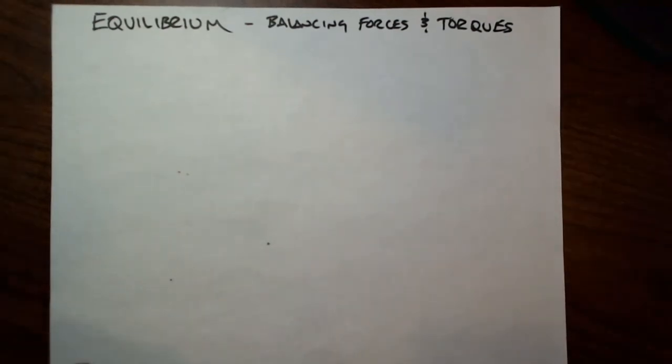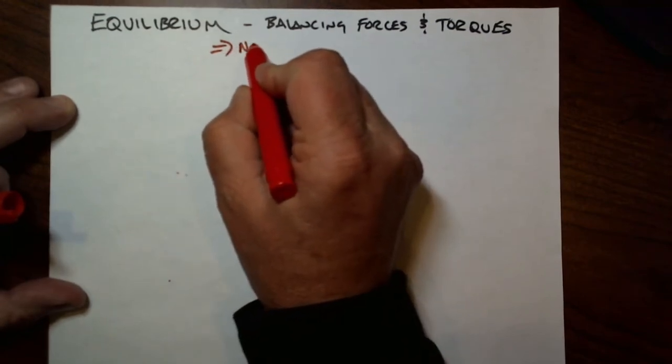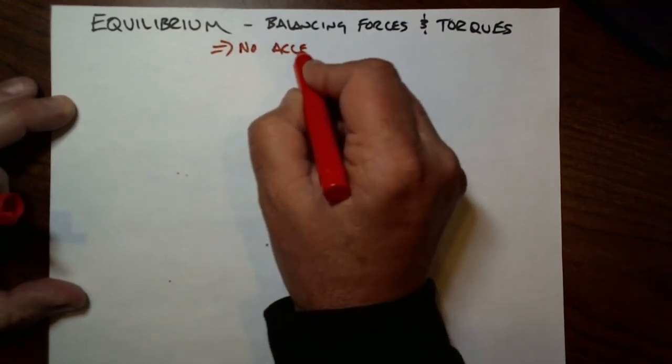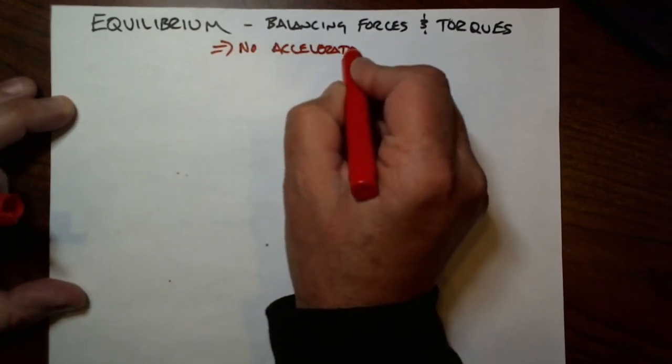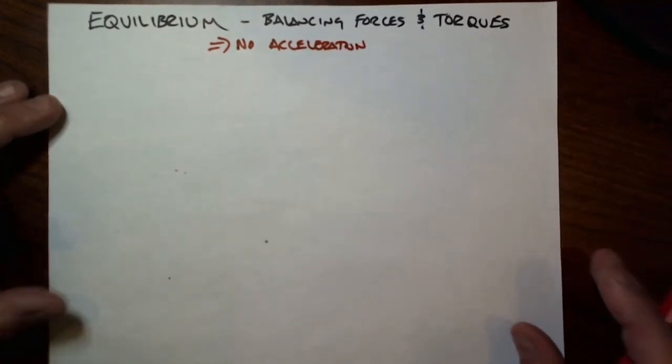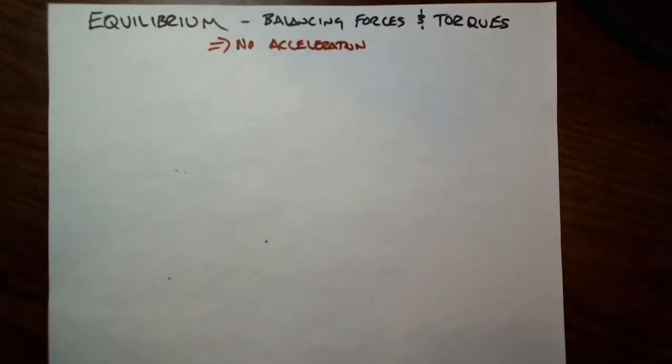If you balance the forces and torques, your object will have no acceleration, not angular or linear acceleration. And this is often very desirable. In fact, if you're going to be a civil engineer, this is all you do: equilibrium, balancing forces and torques, making sure there's no acceleration. Buildings in Los Angeles are designed to be able to move in such a way as to dissipate earthquake energy, but not fall apart at the same time. So it's that falling apart thing we're trying to avoid.